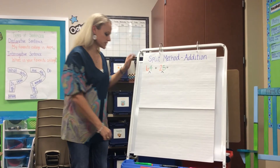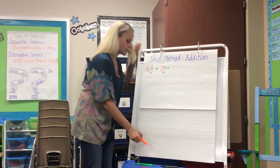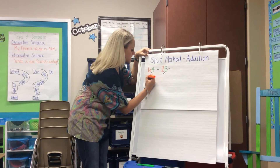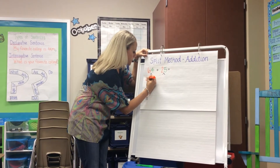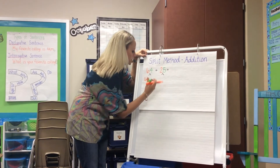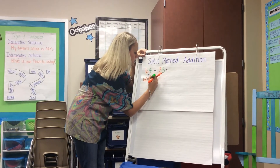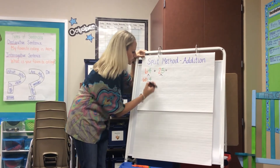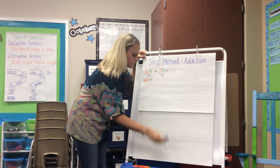In the number 64, students will identify the place value of the number. So they have six tens, which has a value of 60, and four ones, which has a value of 4. They'll split their numbers into the place value in expanded form, so 60 plus 4.